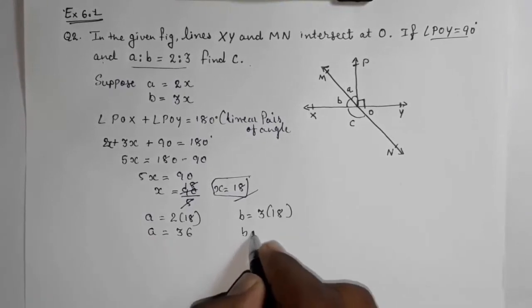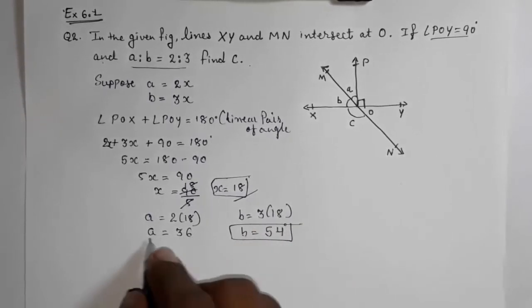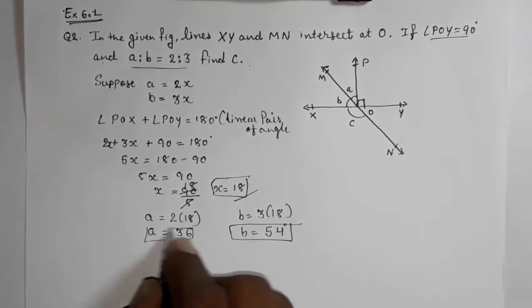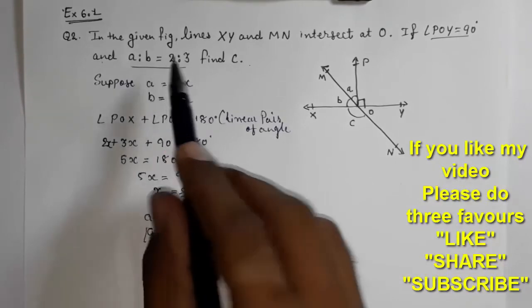So 2 into 18, that a is equal to 36, and b is equal to 54. Now you got b and a also. We know no need of finding this a, but I find out so that you come to know we can find any number when it is given in ratio.